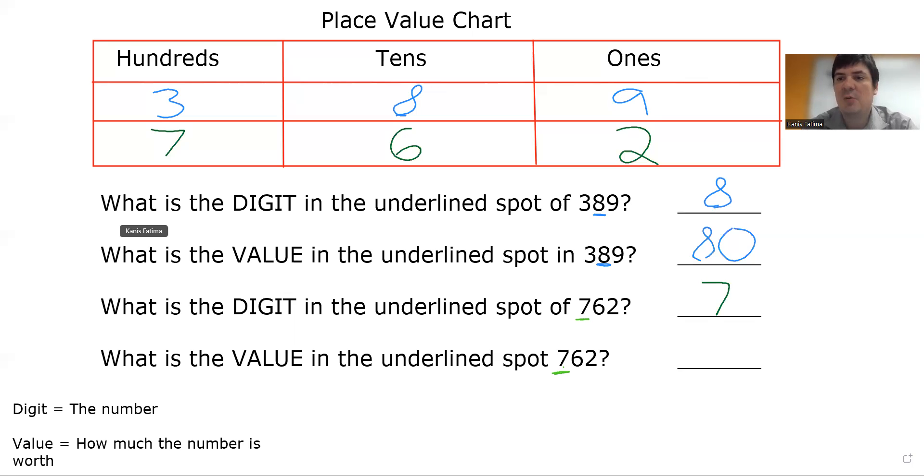The next question asks, what is the value in the underlined spot, 762? So looking at my 7, I see that 7 is in the hundreds column. So that means the value is 7 hundreds or 700.